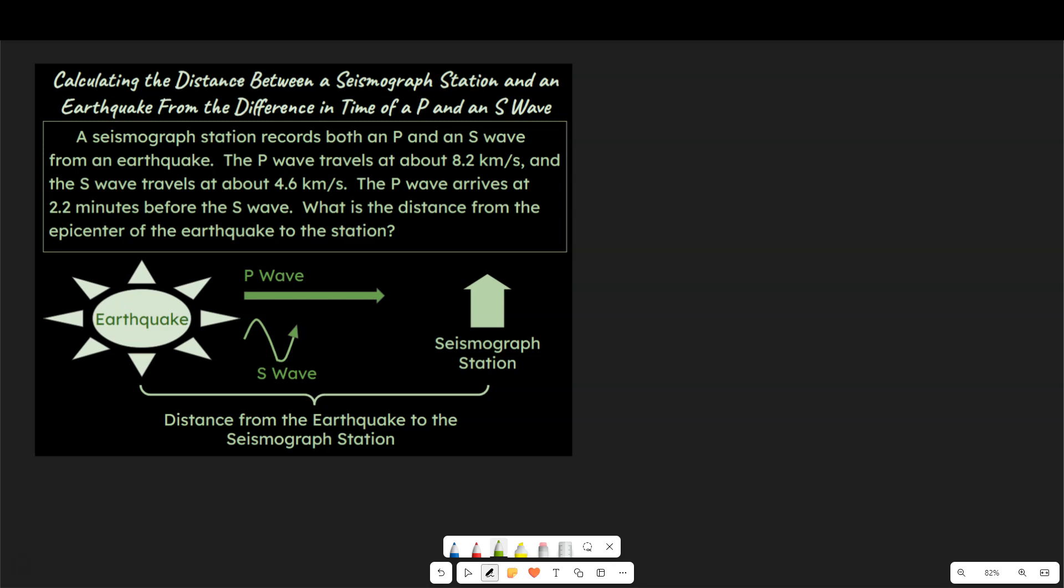The problem says we have a seismograph station and we have a P wave and an S wave. Both of them have their velocities. We have the difference in time between the seismograph station getting the P wave and the S wave, and so let's just start. Let's start with a couple things. Notice that this is going to start with 2.2 minutes.